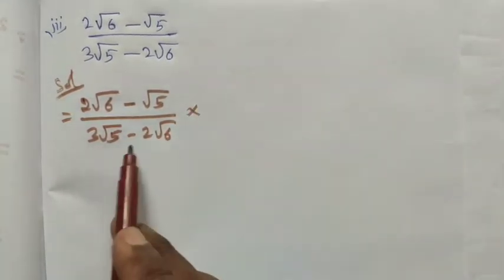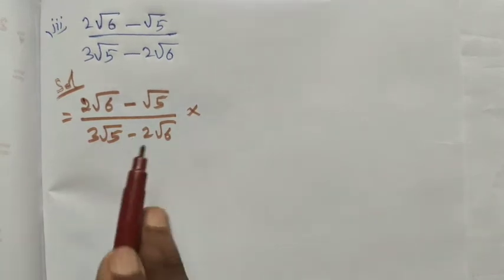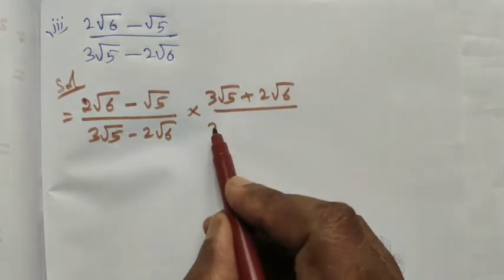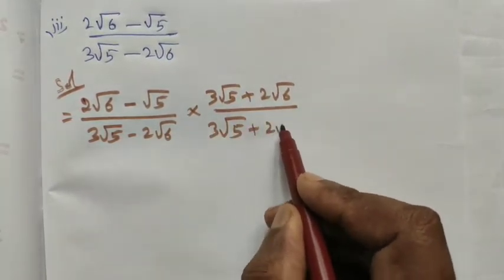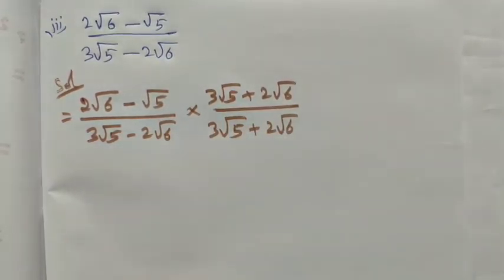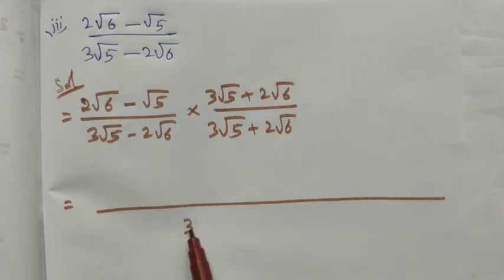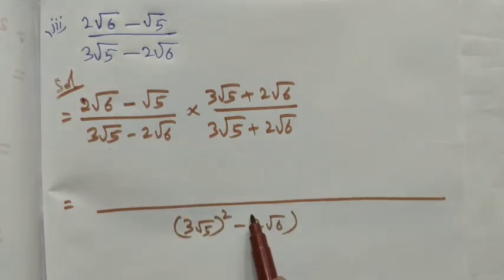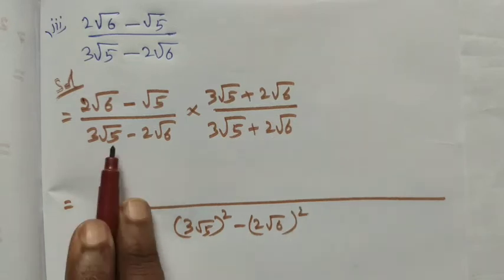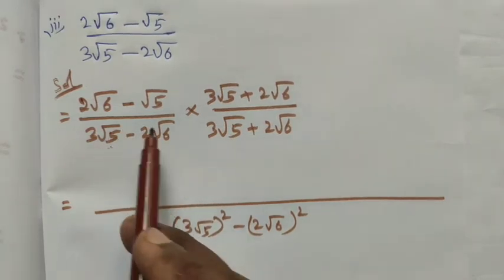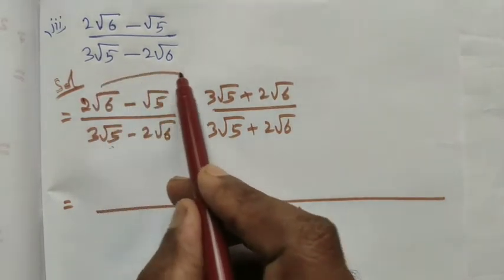The conjugate is in the denominator form — we change the negative sign to positive: (3√5 + 2√6) / (3√5 + 2√6). In the denominator we have the (a + b)(a - b) form, so we directly write it as (3√5)² - (2√6)², applying the a² - b² formula. The numerator is now in binomial times binomial form.